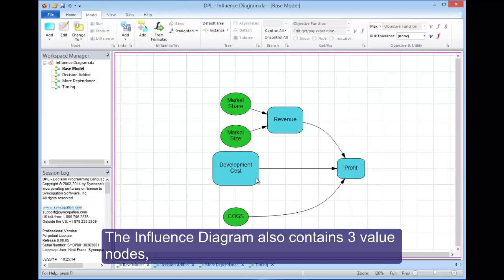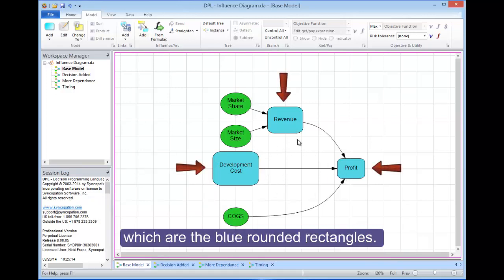The influence diagram also contains three value nodes, which are the blue rounded rectangles.